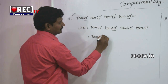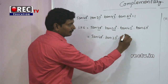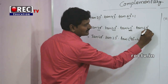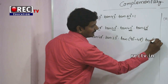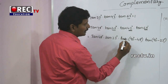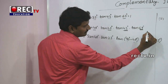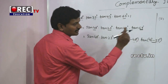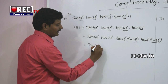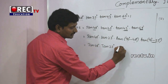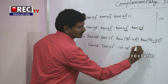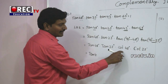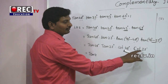LHS = tan48° × tan23° × tan(90° - 48°) × tan(90° - 23°). Using tan(90° - θ) = cot θ, this becomes tan48° × tan23° × cot48° × cot23°. Since cot48° = 1/tan48° and cot23° = 1/tan23°, the terms cancel.